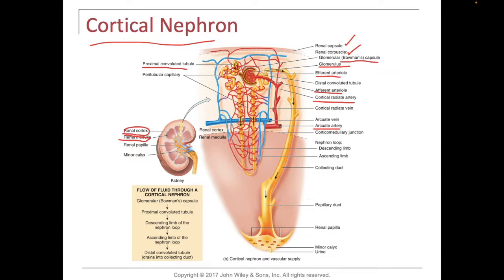Here's the proximal convoluted tubule, and now we have the descending limb of the loop of Henle coming down, then the actual loop, and then it comes up for the ascending limb of the loop of Henle. Then you've got the distal convoluted tubule, and if we cut that distal convoluted tubule, you're going to see the macula densa cells between the afferent and efferent, making up the juxtaglomerular complex — with the macula densa cells and juxtaglomerular cells involved in releasing erythropoietin and renin.